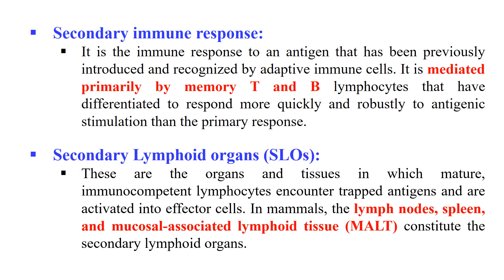Next, Secondary Lymphoid Organs. These are organs that provide the site for interaction between immune cells and antigens. In these organs, the antigens are entrapped and immune cells — either B or T cells — come and interact with the antigen and eventually neutralize it. Secondary lymphoid organs include lymph nodes, spleen, mucosal-associated lymphoid organ, etc.